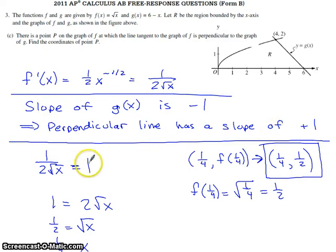cross-multiplied, divided by 2, squared each side. I got 1/4. That tells me the x-coordinate of the point of tangency. If you want the entire point of tangency, you still need the y-coordinate. So you need to find f(1/4). Well, f(1/4) is just going to be the square root of 1/4, or 1/2. So the tangent line to the graph of f at the point (1/4, 1/2) is going to end up being perpendicular to the graph of g.